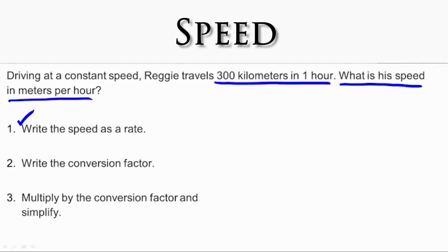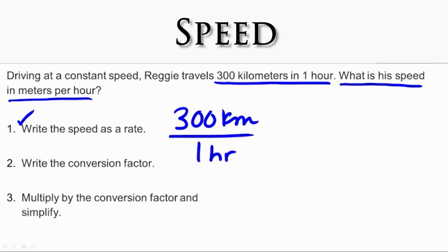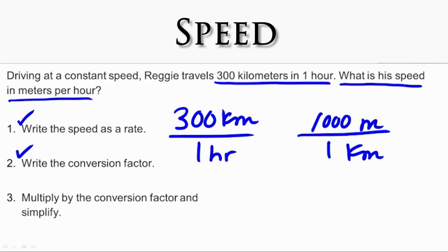Let's look at the steps in the solution process. Step one: write the speed as a rate. Speed is the rate of distance to time. I'm going to write the distance of 300 kilometers over time, which is one hour. Step one is complete. Step two: write the conversion factor. When I write a conversion factor, I want the same unit diagonal from the same unit so that they will cancel each other out. So I'm going to put one kilometer on the bottom. And remember, we're converting to meters — there are 1,000 meters in a kilometer. Now I'm ready to do step three.